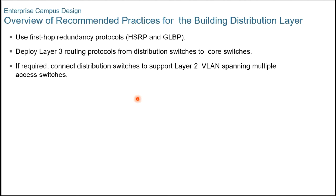Overview of recommended practices for building distribution layer design: first, use a first-hop redundancy protocol — either HSRP, GLBP, or VRRP. Next, deploy layer 3 routing protocols between the building distribution switches and campus core switches. Lastly, if required, connect distribution switches to support layer 2 VLAN spanning across multiple access switches. If required, building distribution switches should support VLANs that span multiple building access layer switches.